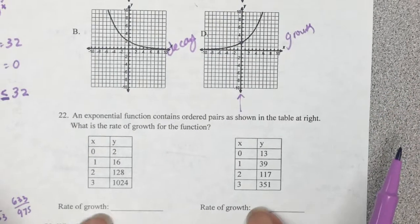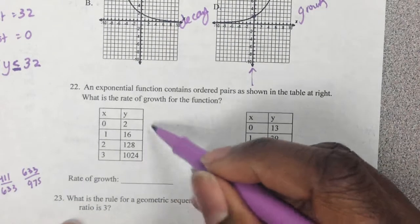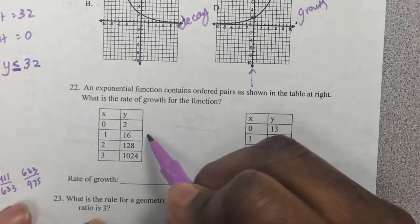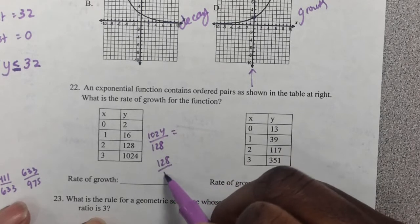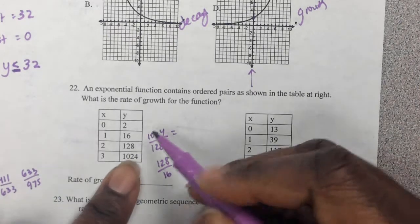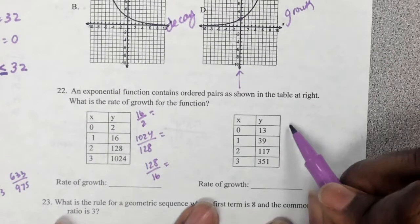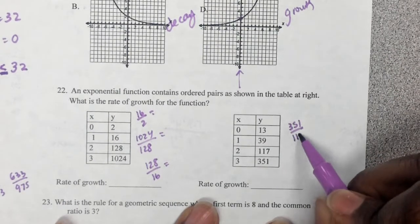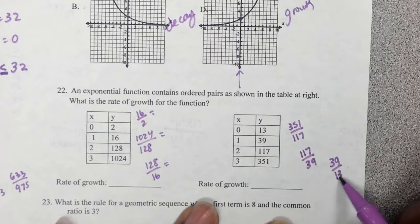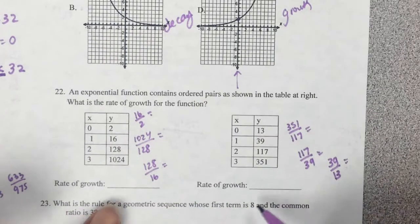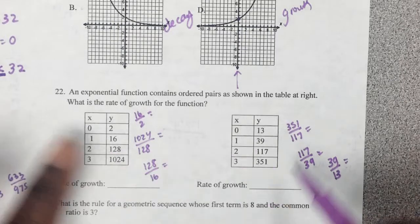For number 22, same thing here. You've got to find the rate, which means you've got to do your backwards dividing. Dividing, starting down here with 1024 divided by 128, then 128 divided by 16, and also you can do 16 divided by 2. Same thing here. 351 divided by 117. 117 divided by 39. 39 divided by 13. If all those are equal, that is your rate of growth or rate of decay. If they're not equal, that means it's not even an exponential function.